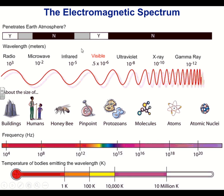Here is the electromagnetic spectrum. The basic electromagnetic spectrum is: radio waves, microwaves, infrared waves, visible light rays, ultraviolet rays, x-rays, and gamma rays. The way I always remember the electromagnetic spectrum is with the saying: red Martians invaded Vegas using an x-ray gun.